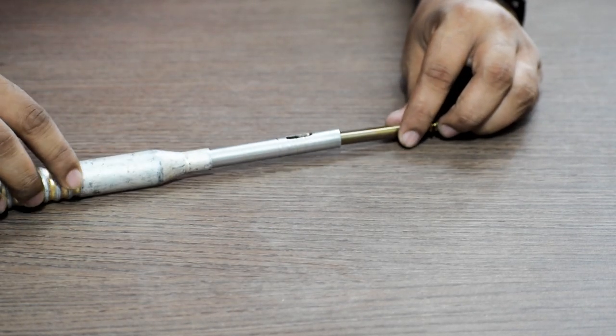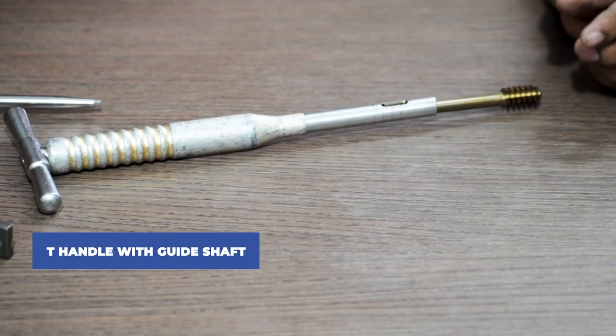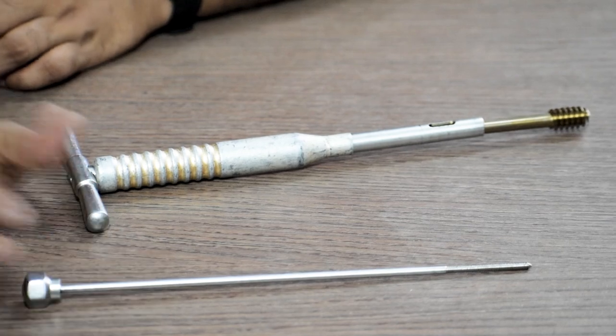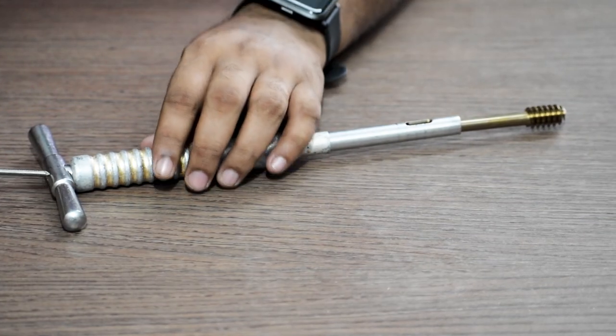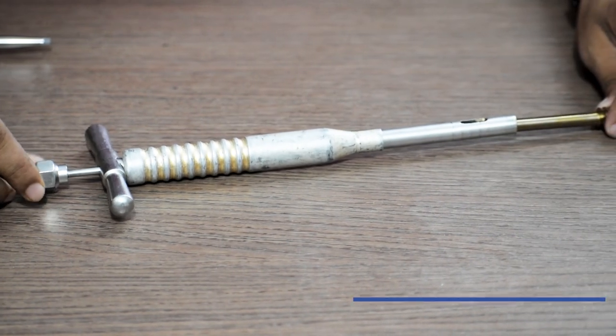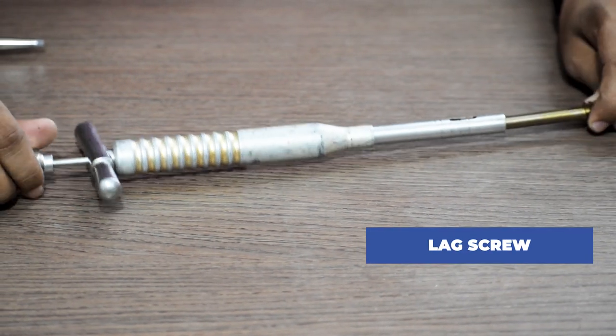After that we attach the T-handle and then insert the guide shaft through the T-handle. Lock the lag screw with the guide shaft.